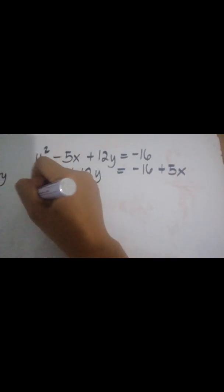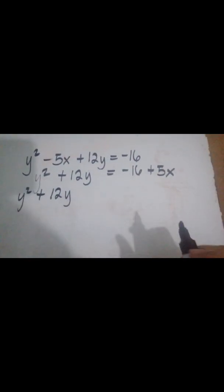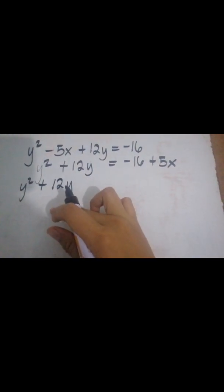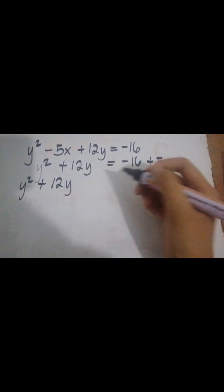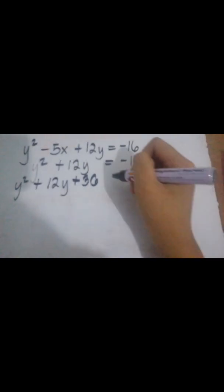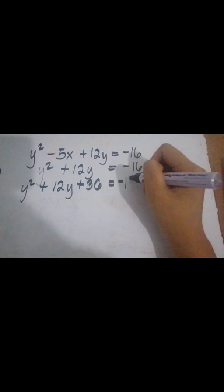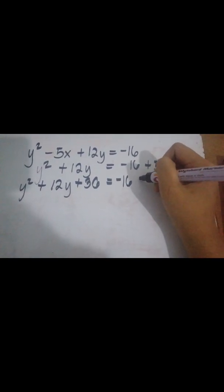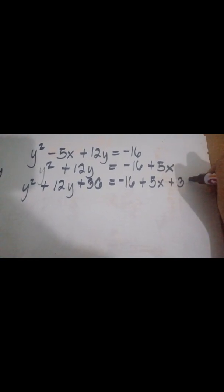We have y squared plus 12y. Take 12 divided by 2, that is 6. 6 squared is 36. So we are going to add 36 here. By the law of completing the square, whatever you add on the left-hand side must also be added on the right-hand side. So we have negative 16 plus 5x plus 36.